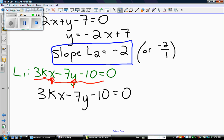There's my line and I want it in slope intercept form. So I'm going to isolate the y term. So negative 7y gets to stay where it is. And I need to remove 3kx. So it becomes negative 3kx. I need to remove negative 10. So I have plus 10.